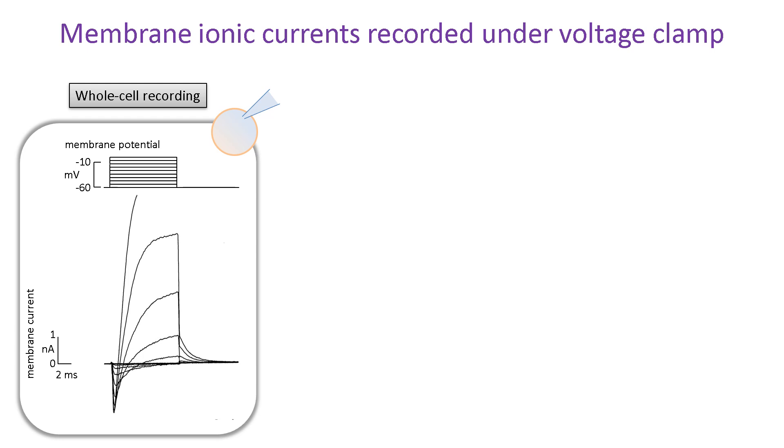Here, you can identify two types of voltage-gated current. One activates quickly with downward deflections, indicating inward current or inward movement of positive ions. These currents are caused by sodium channels opening. The other appears slightly delayed and deflects upwards, indicating outward current or outward flux of positive ions. These currents are due to potassium channels opening.